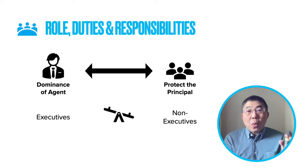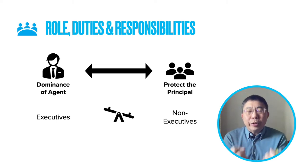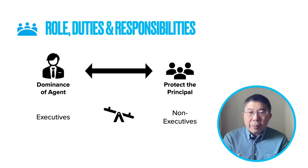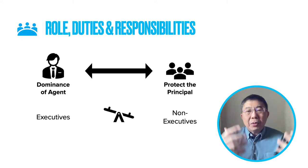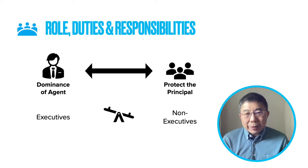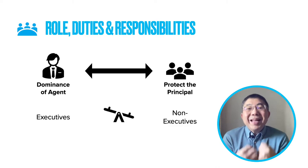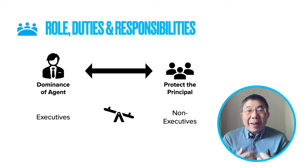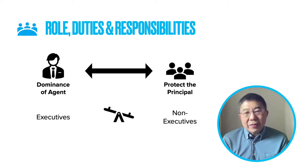We need to have the right balance of executives and non-executives. In most boards, the majority of members are likely to be non-executive directors. This is to ensure the board plays an effective role in protecting the interests of its principals — its shareholders and other stakeholders. If a board is dominated by many executives, then the ability of the board to protect the principal may be affected. So there needs to be the right balance of executives and non-executives.